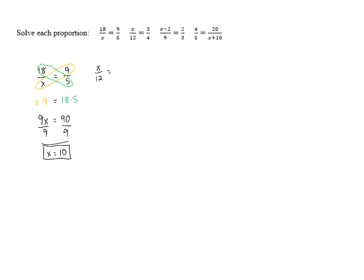x over 12 equals 3 fourths. Again, we're going to use cross multiplication here. We've got 12 times 3 equals x times 4.